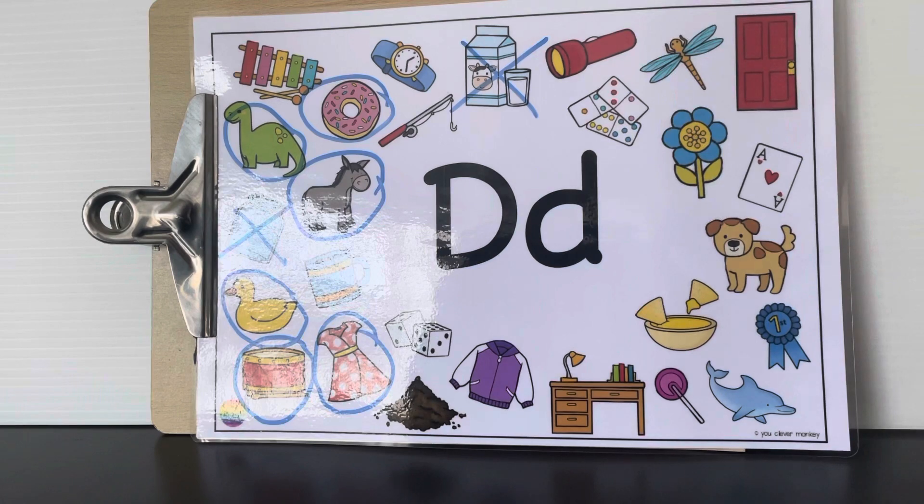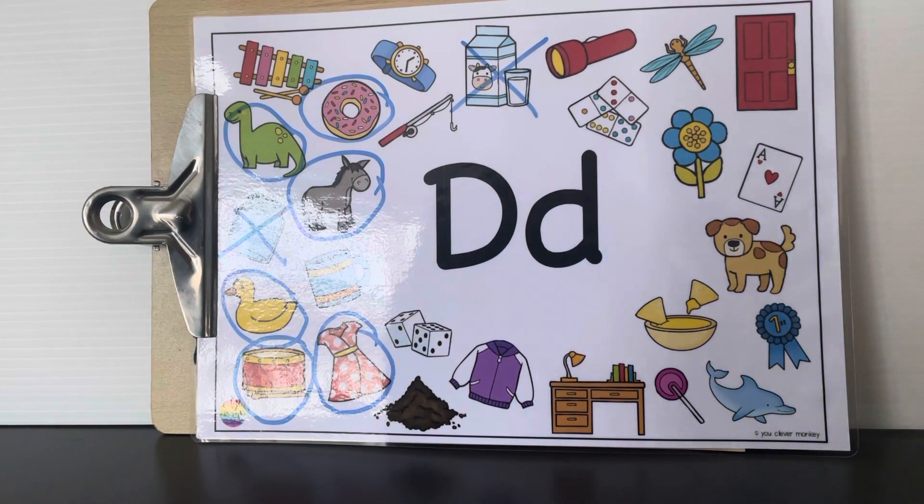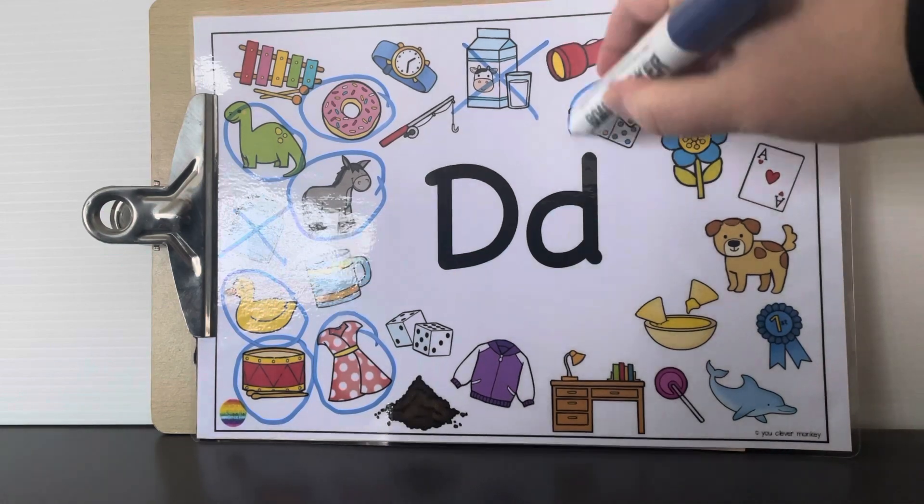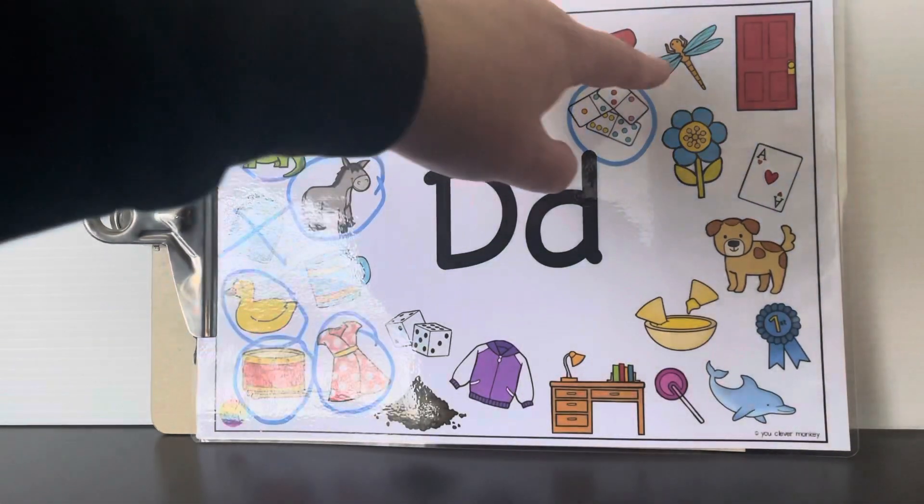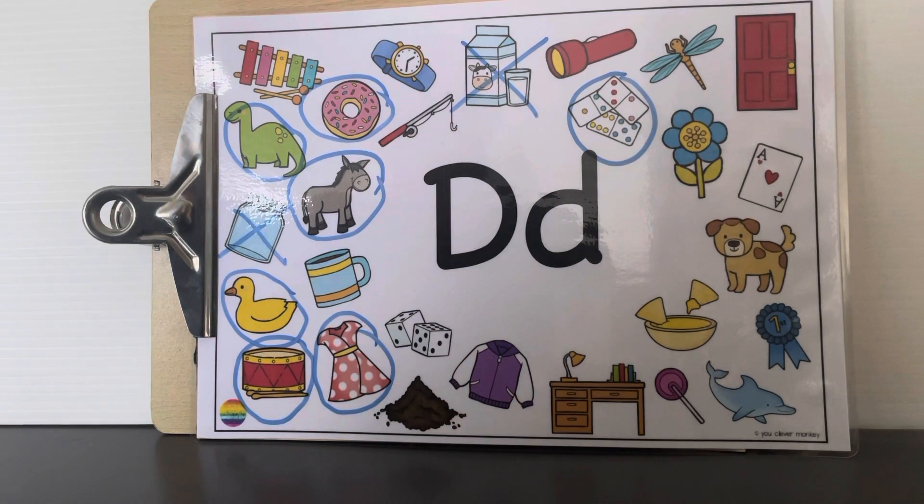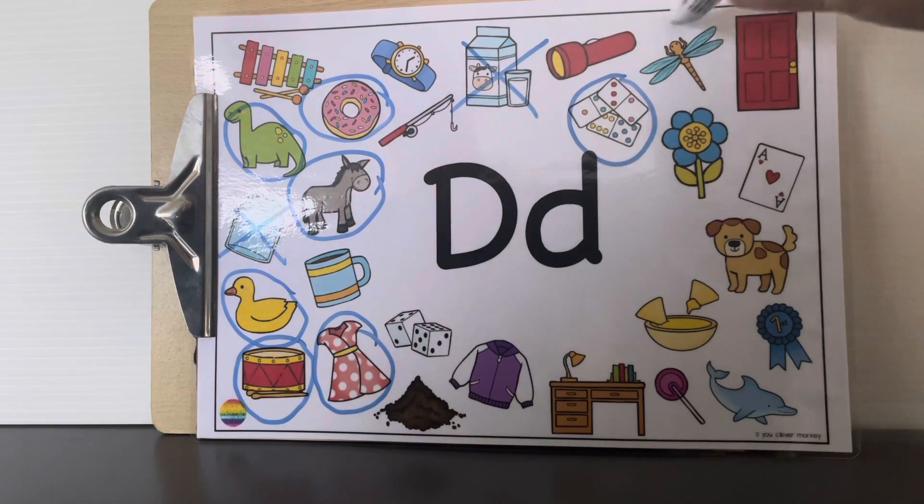What about these? Dominoes. Can you hear a D in dominoes? Yeah. This animal here is called a dragonfly. Dragonfly. Can you hear a D at the start of dragonfly? Yeah. Let's circle that one.